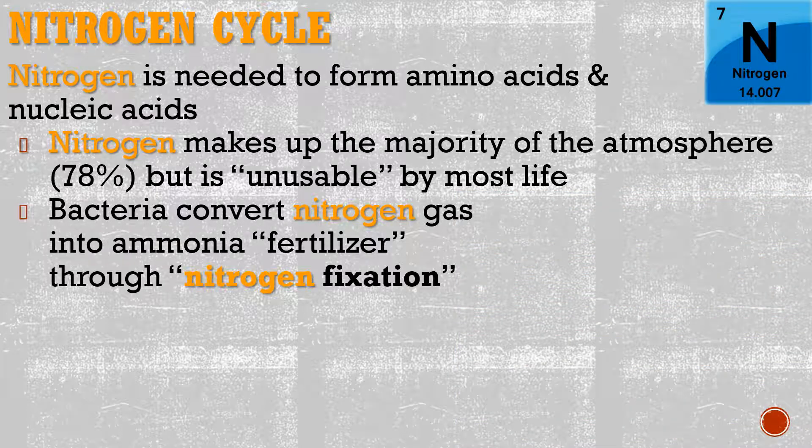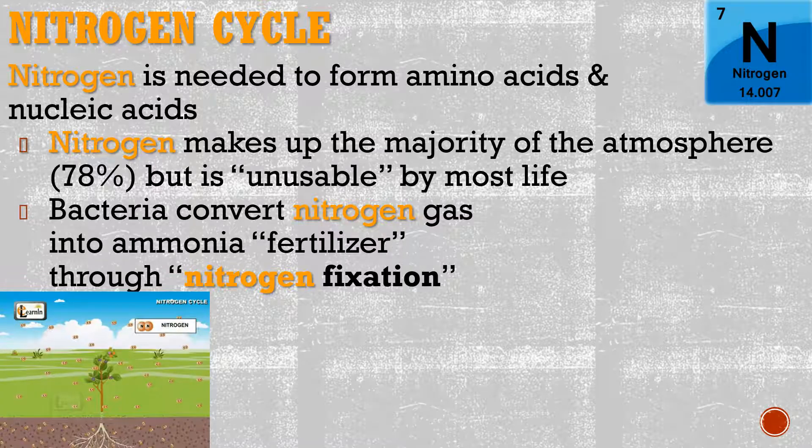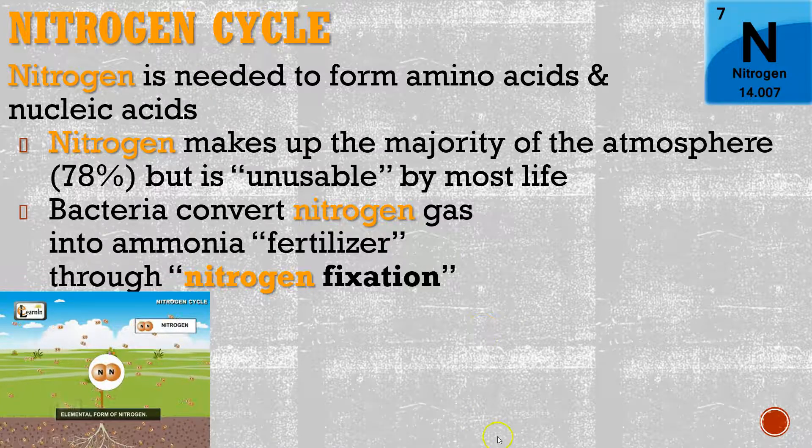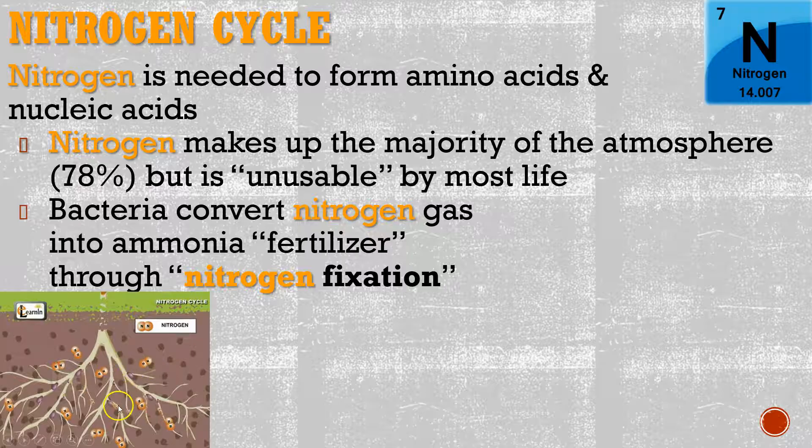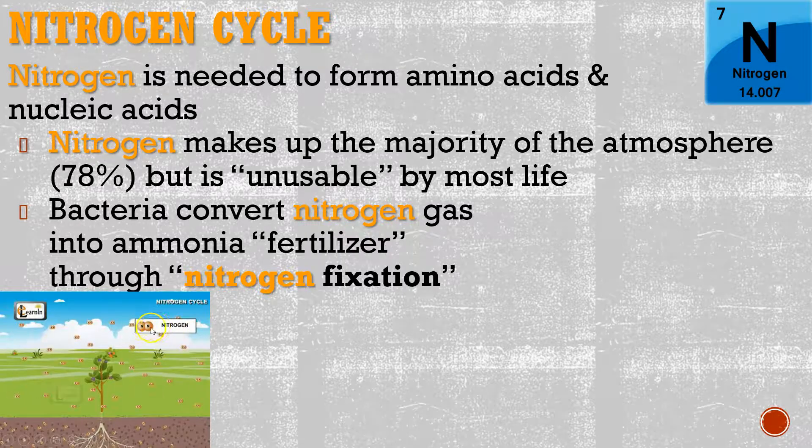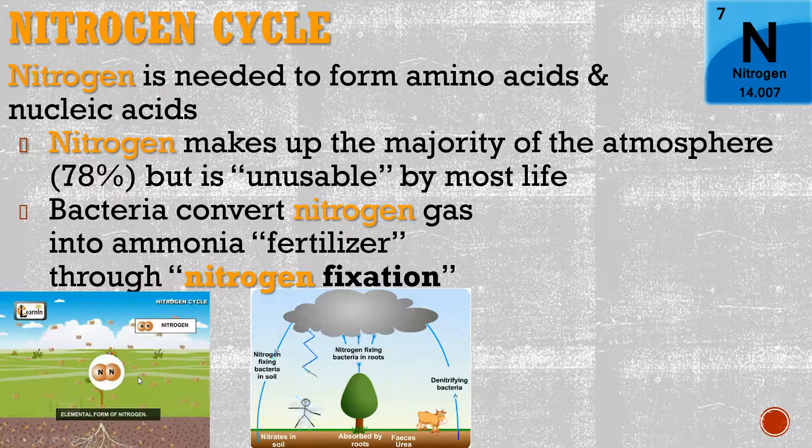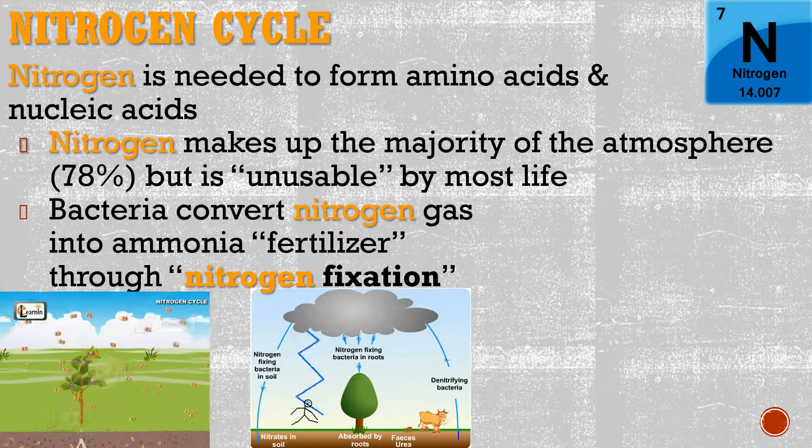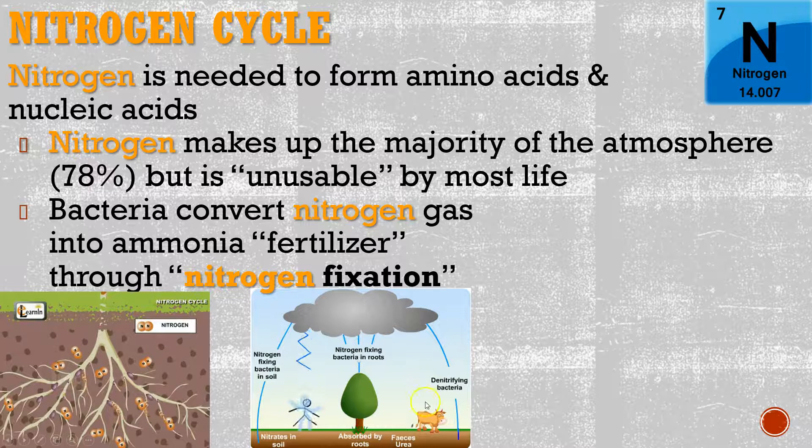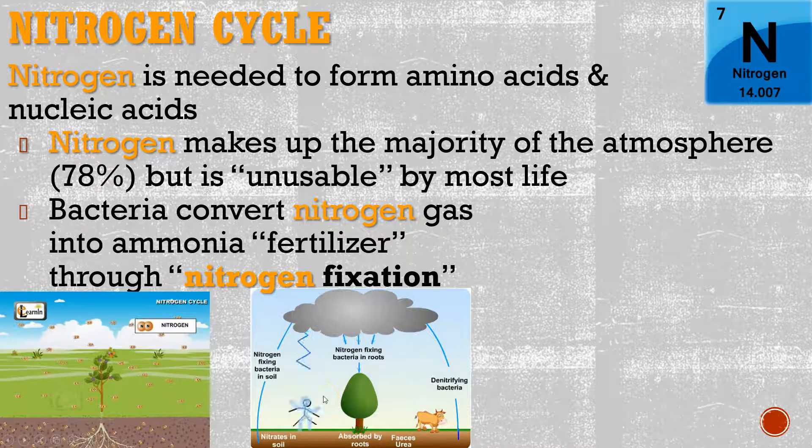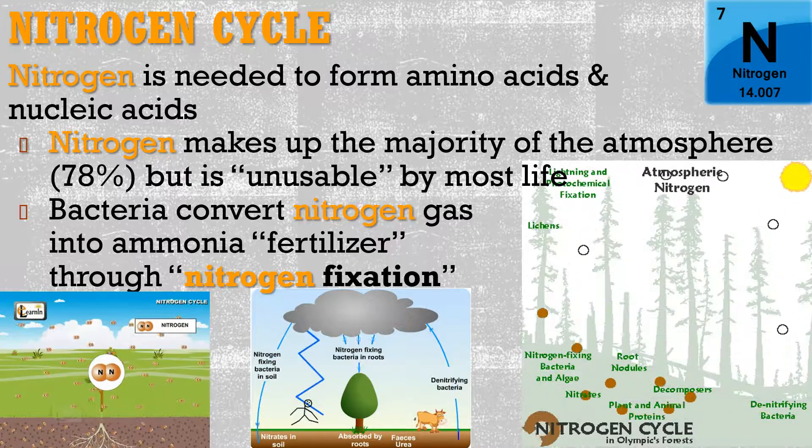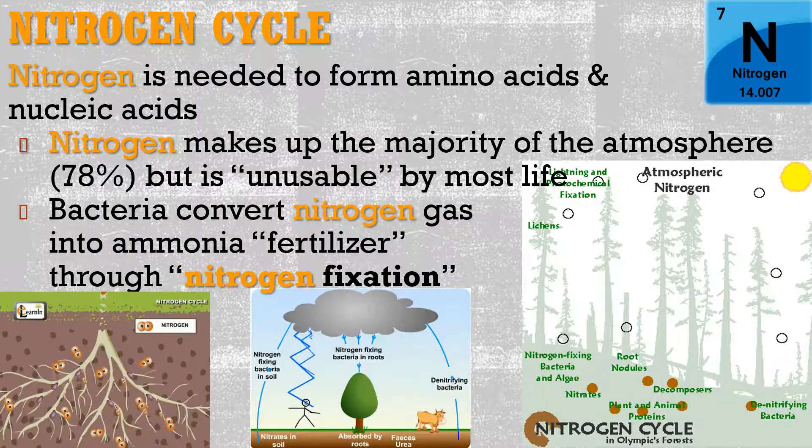So what we need is we need bacteria or other microorganisms that are going to convert the nitrogen gas into ammonia fertilizer through what is called nitrogen fixation. So here we can see the elemental nitrogen, and that's going to go down into the roots of plants, and there you have these bacteria that can convert that nitrogen into something more useful. So here's kind of the nitrogen cycle. We've got things that are pulling it out, and then we've got these bacteria that are releasing it back into the air. And it's always going to be going from one form into the other. It's never used up. It's never wasted.